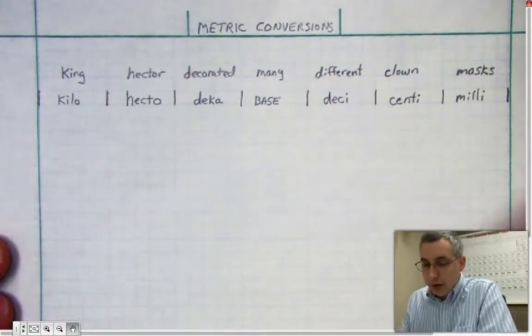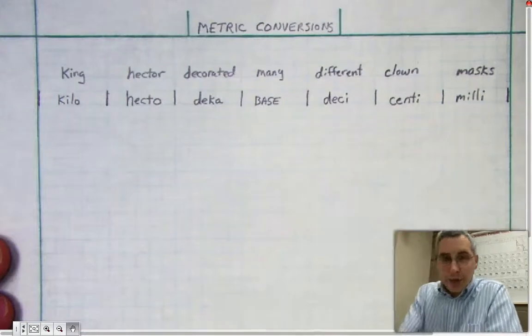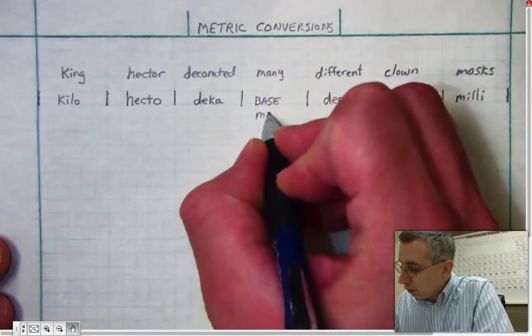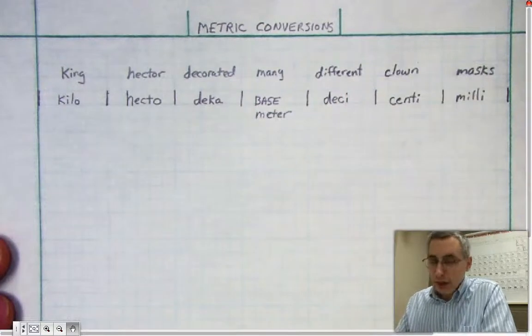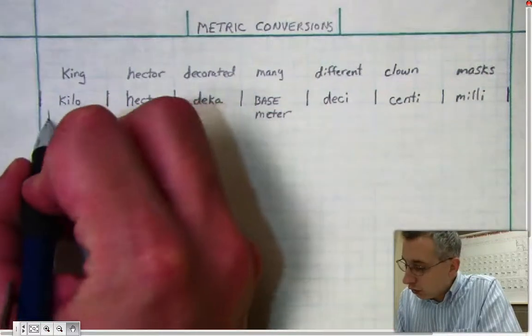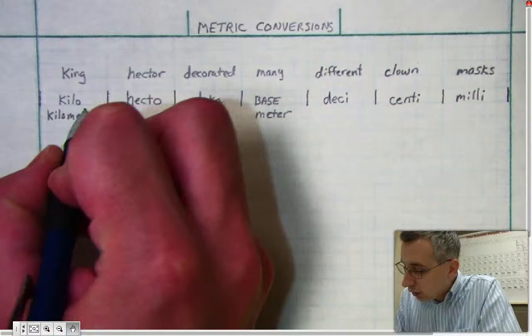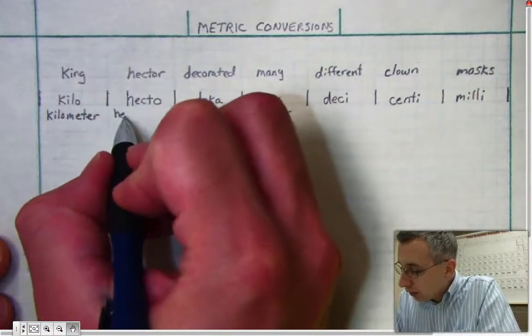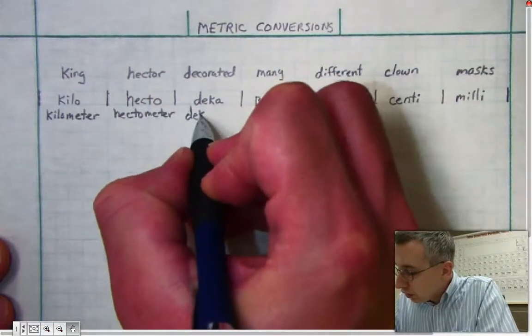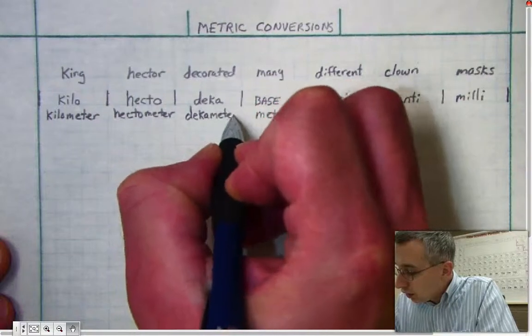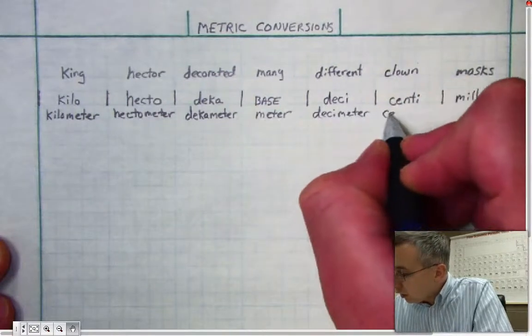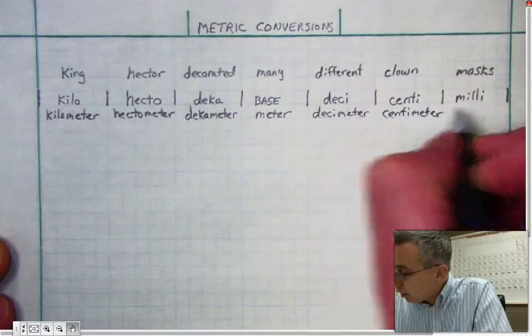So I listed the prefixes here. I'm going to work an example and in my example I'm going to use meter as my base unit. So underneath here I'm just going to write meter, and I'm going to actually write the full word for each of these columns. So I will write kilometer, hectometer, decameter, the base meter, decimeter, centimeter, and millimeter.